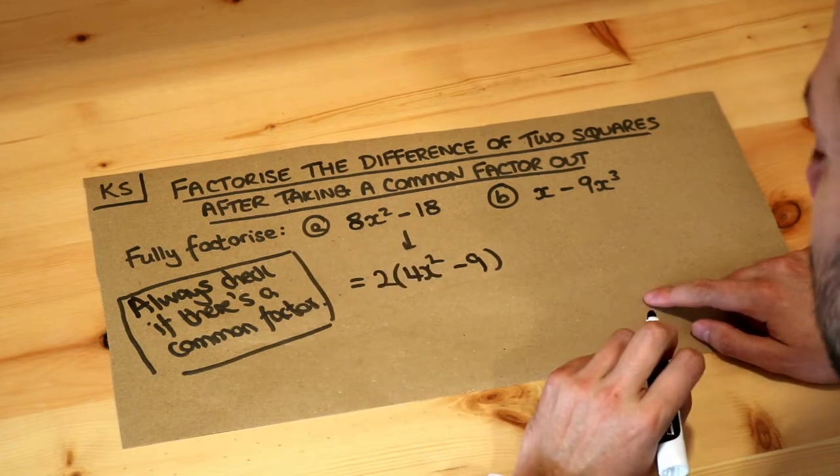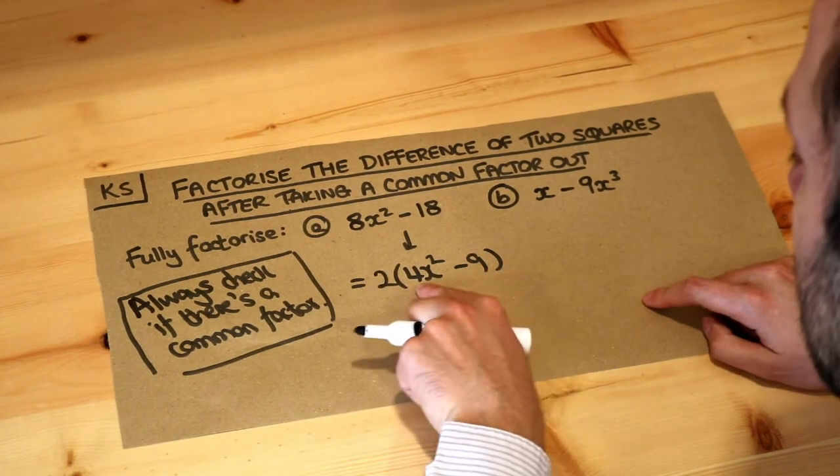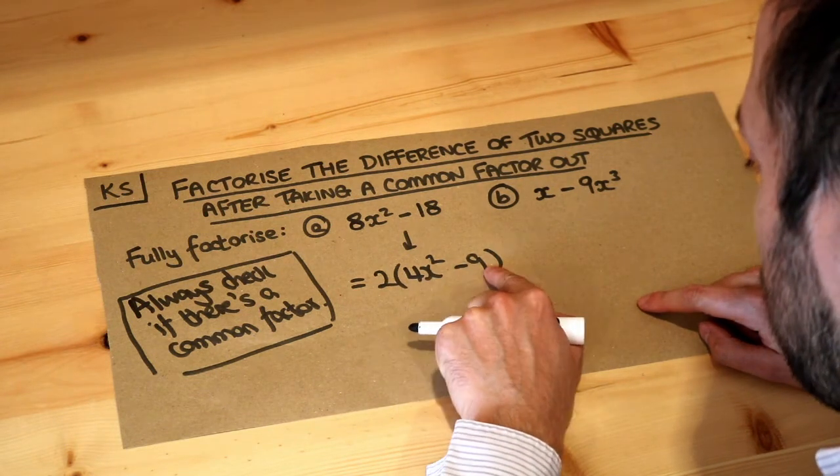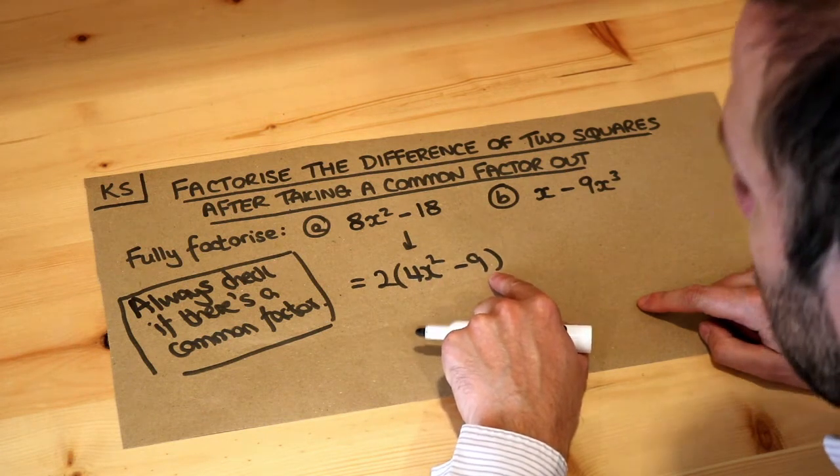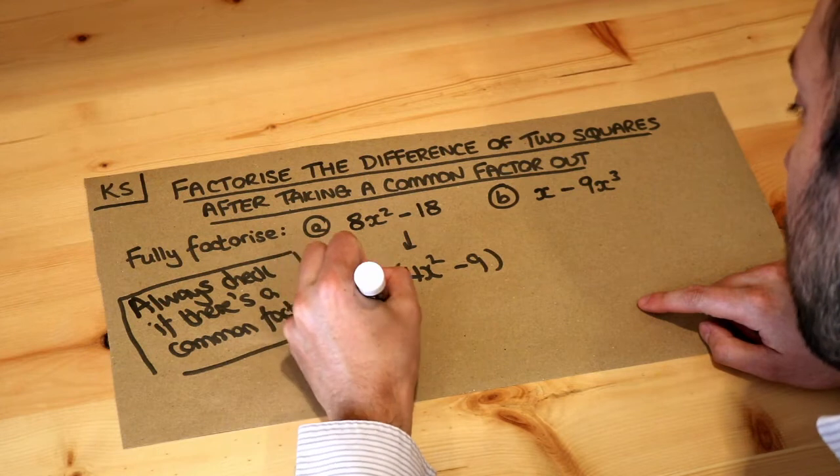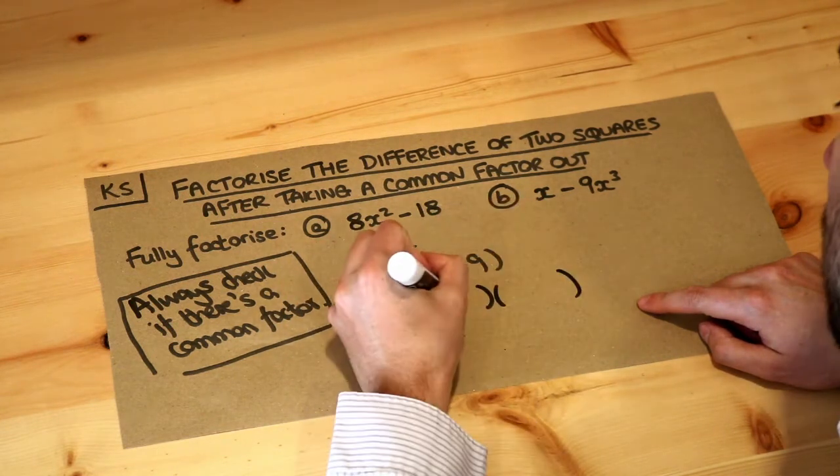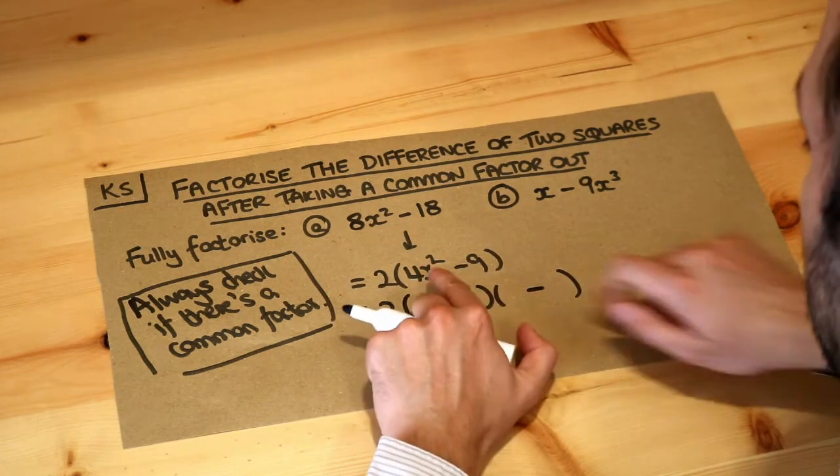Now can we use any other methods of factorisation here? Well, can you see that this here is the difference of two squares, because it's a difference of two squared things. 4x² is something squared. 9 is something squared, it's a square number. So remember how we factorise the difference of two squares. We have two brackets, one plus in the middle, one minus in the middle.